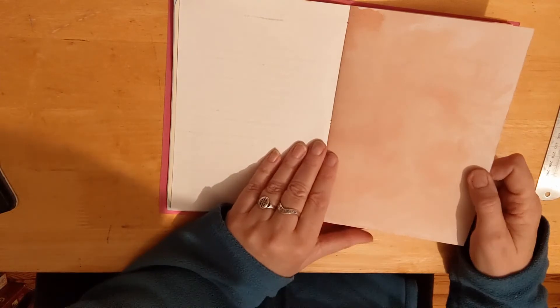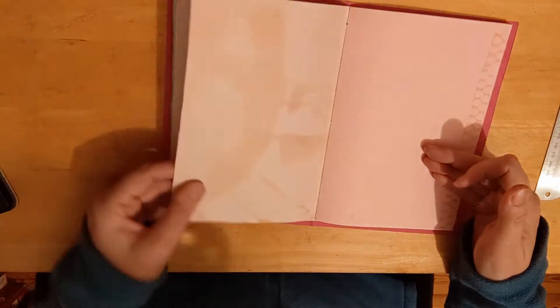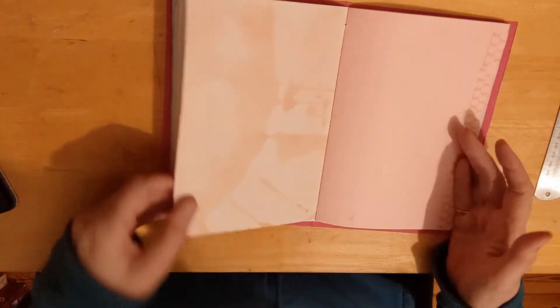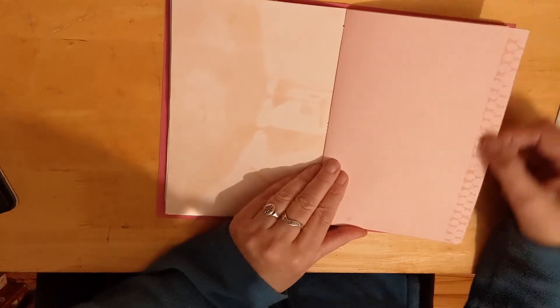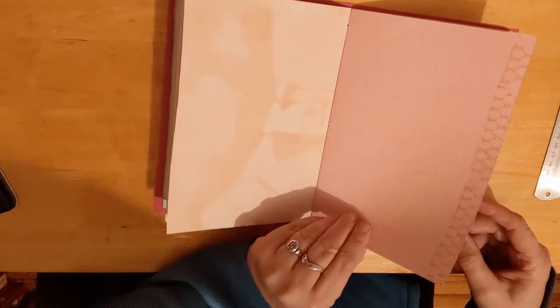And then this is onion dyed paper. I left that plain because it's very colorful itself, or patterned I suppose is the word. Then I did a little bit of stenciling along the side of this pink card.